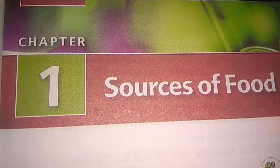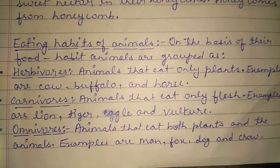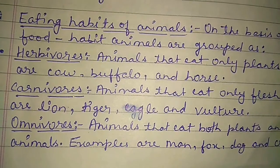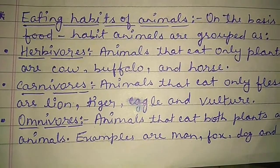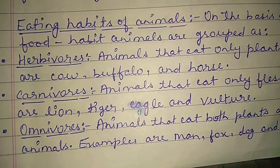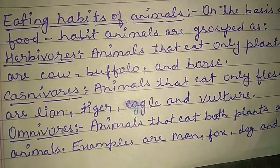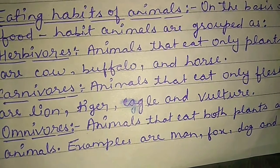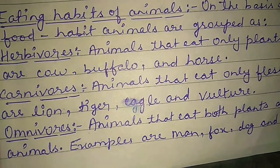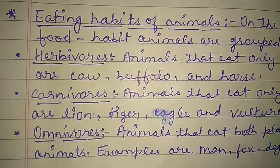Today we will start with the topic Eating Habits of Animals. As we all know, all animals eat food and different animals eat different kinds of food. Some animals eat only grasses and leaves, some eat only flesh from other animals, and some animals eat both plants and flesh.